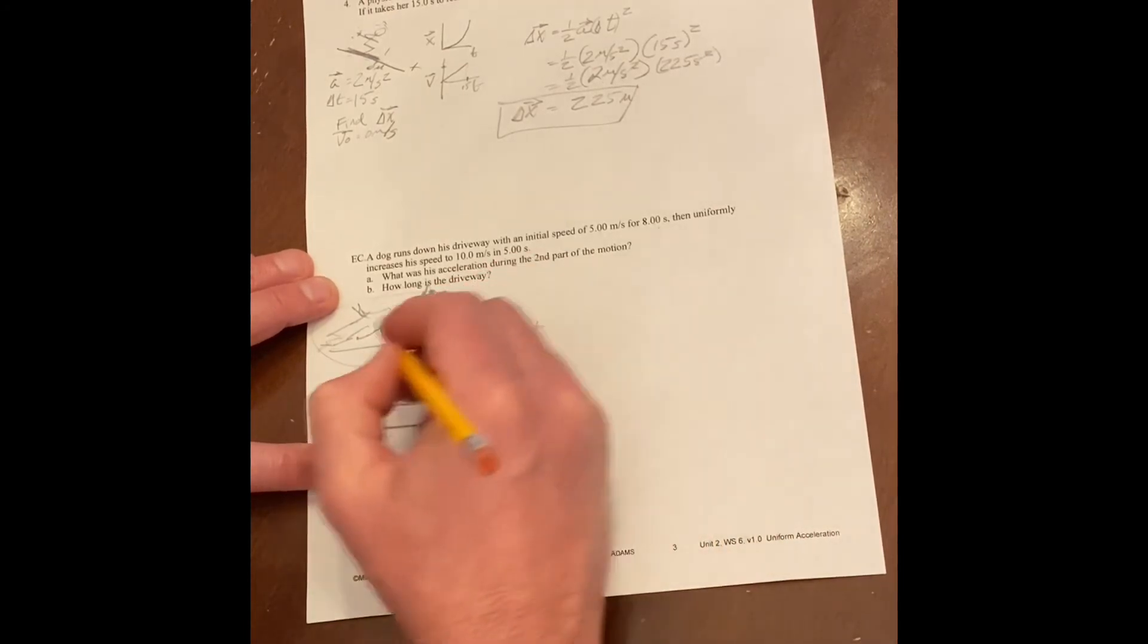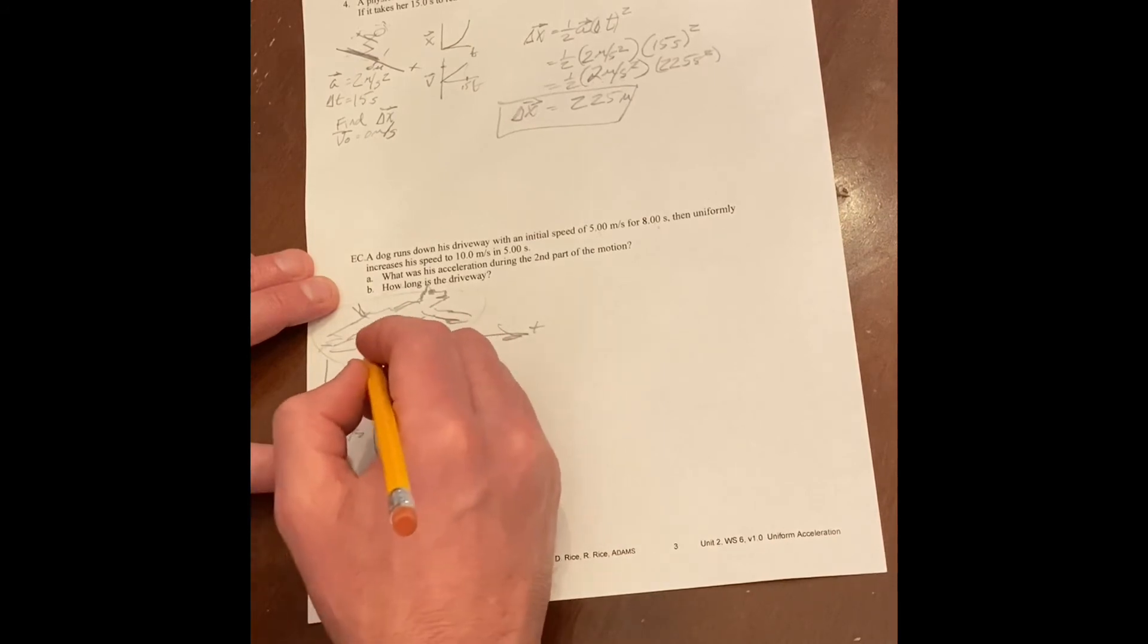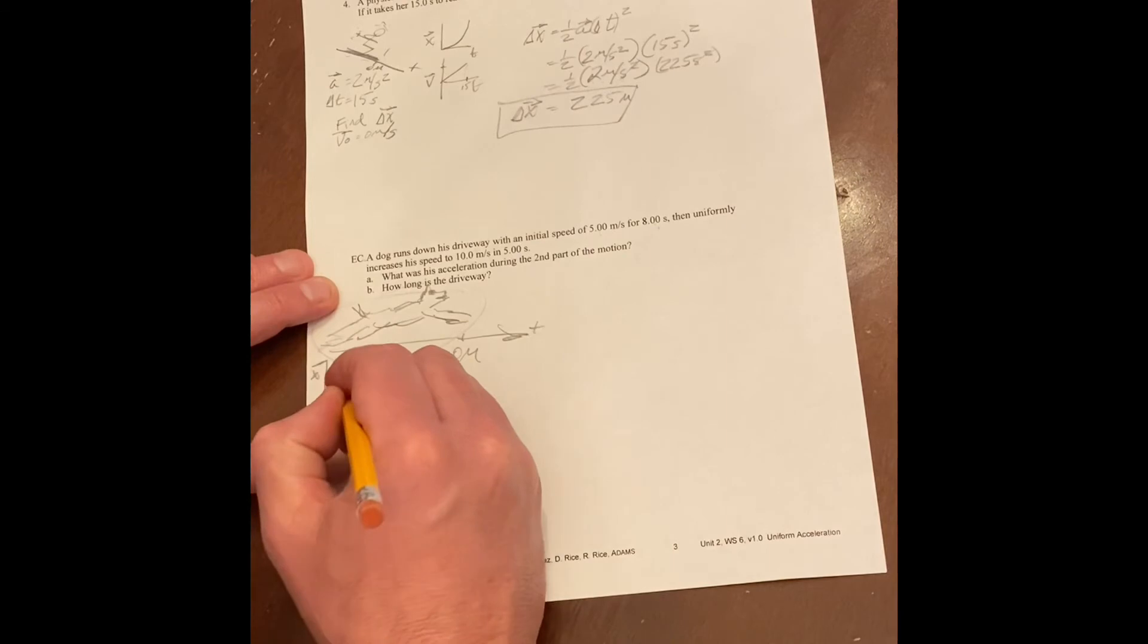Let's see our position versus time graph would be what constant velocity and then speeding up. So it'd have to be a straight line. And then from there, it would speed up. So our position versus time graph would be a straight line and then a top open curve.